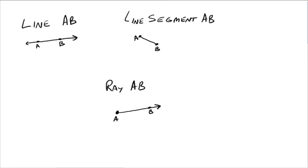So we've got lines. For example, this first one up here, we'd say that was line AB. If we just took these two points and said there's a line that goes through them, we'd call it line AB — but it goes off forever in both directions. Whereas a line segment AB just goes from point A to point B, and it's just that segment.